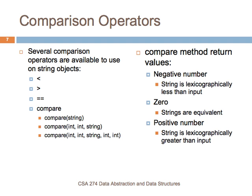The compare operation in the string class also allows you to do comparisons of strings, and the way that you interpret the value you get back from the compare operation is shown here on the right. If you get a negative number back from compare, then the string is lexicographically less than the input. If you get zero, then the strings are equivalent. And if you get a positive number, then the string is lexicographically greater than the input.